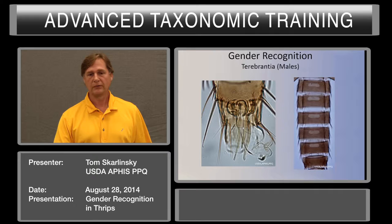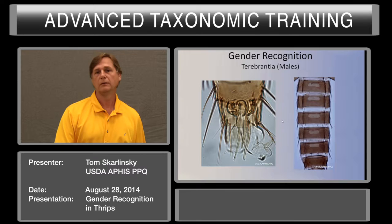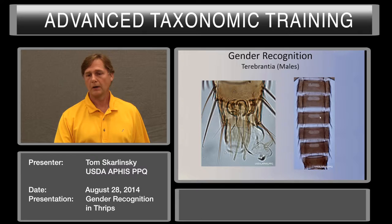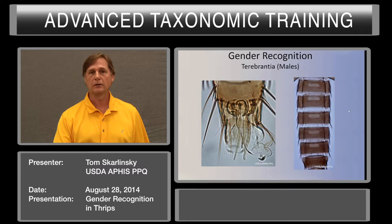Males are also kind of recurved backwards when you see them in vitro in alcohol. Also in the Terebrantia, males will have these little glandular areas on the sternites. They may not have every sternite with a glandular area — there may only be a couple — but they oftentimes will have glandular areas on the sternites.